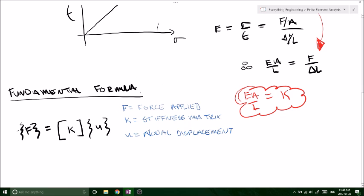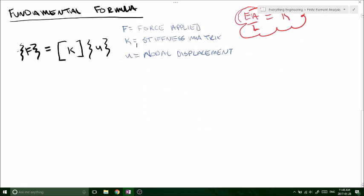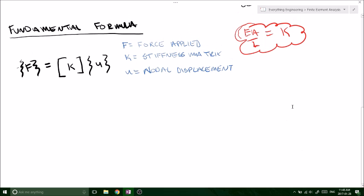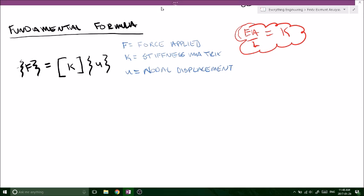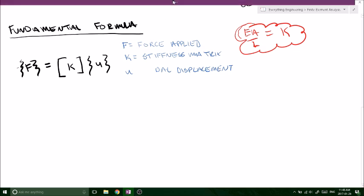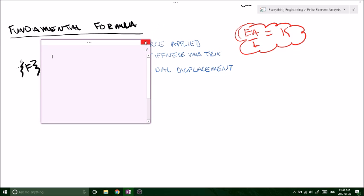And then we've got our stiffness matrix, which is nothing more than what we've just proven to be a property of the cross-section and area and length of our bar segment. And then we've got U, which is just what we're going to use as our nodal displacement. So it's the displacement at each one of the nodes that we'll solve for using the matrix method.